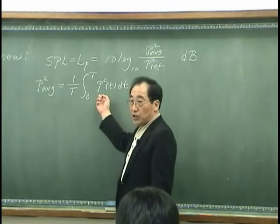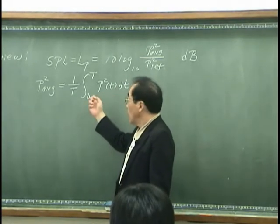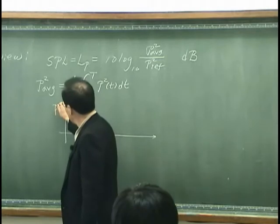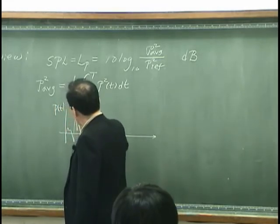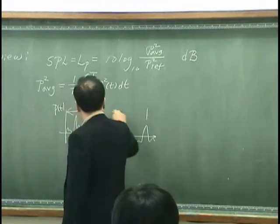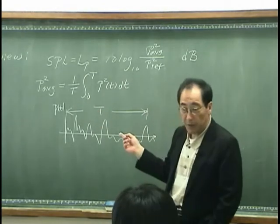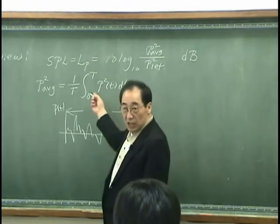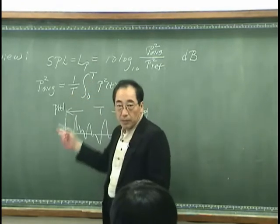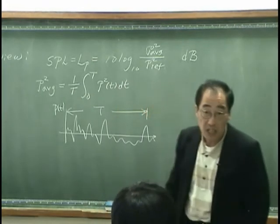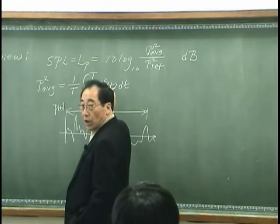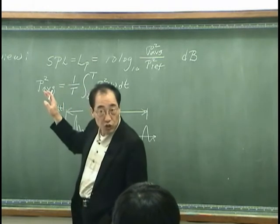I am measuring P square, sound pressure square, along time scale. For example, if Pt look like this. I am taking this time record for the time capital T, integrate with respect to time, and then divide by capital T to take a mean. That's why we call this mean square average.